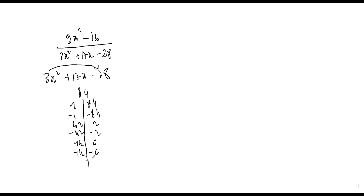Also seven and twelve, and negative seven and negative twelve. The sum we need is positive seventeen. But since the product is negative eighty-four — because three times negative twenty-eight is negative eighty-four — one factor must be negative. So let's use the quadratic formula instead.